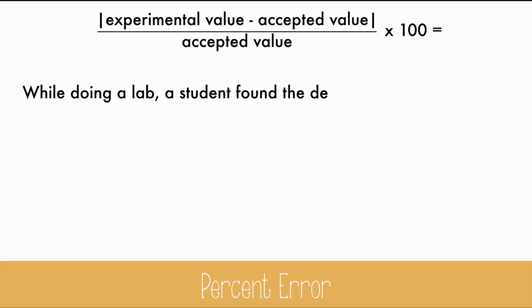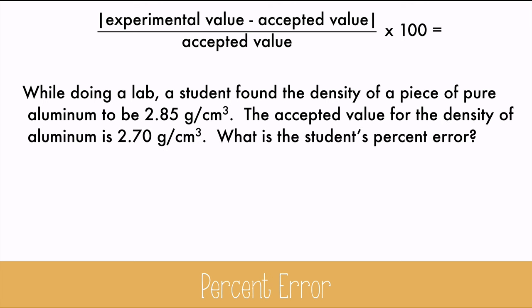While doing a lab, a student found the density of a piece of pure aluminum to be 2.85 grams per cubic centimeter. The accepted value for the density of aluminum is 2.70 grams per cubic centimeter. What is the student's percent error?